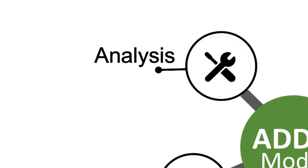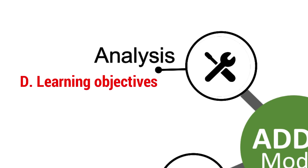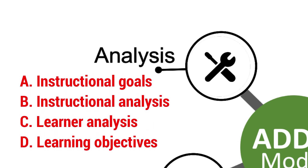Doing a thorough analysis before developing and implementing instruction can save a lot of time and resources. The analysis phase generally consists of four sub-phases: the development of instructional goals, an instructional analysis, a learner analysis, and the development of learning objectives.